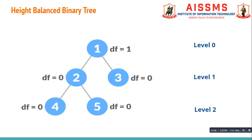Let us understand this with the help of one example. This is a binary tree and our goal is to check whether this binary tree is height balanced or not. We have to check the three conditions required for a height balance tree for each node. Let us start with the root node. The left subtree of node 1 contains nodes 4, 2, and 5, and the right subtree of node 1 contains only one node, that is 3.